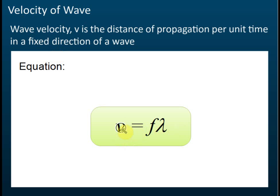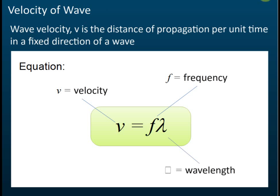In the formula v = fλ: v is the speed or velocity of the wave, f is the frequency of the wave, and lambda (λ) is the wavelength of the wave.